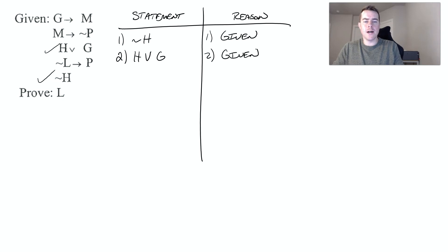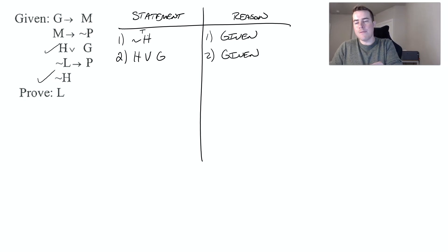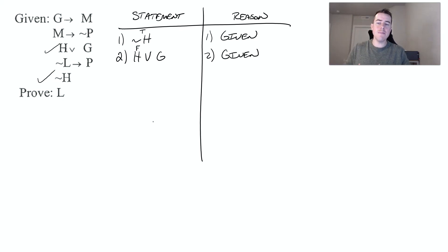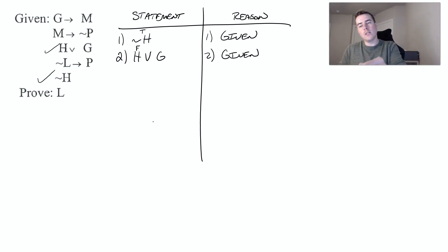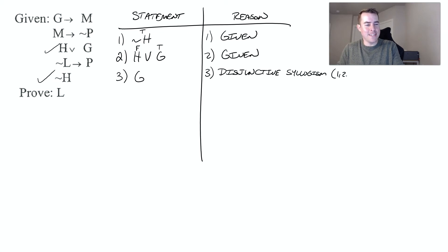Usually you're going to start with two given statements. Since not H is true, H is false. The only way the disjunctive statement H or G is true is if one or both are true, which means G must be true. So we conclude G. That's our disjunctive syllogism from lines one and two.